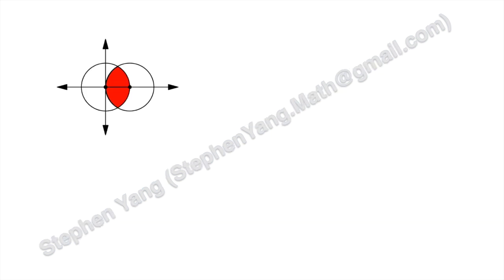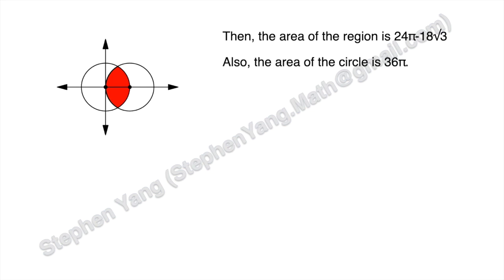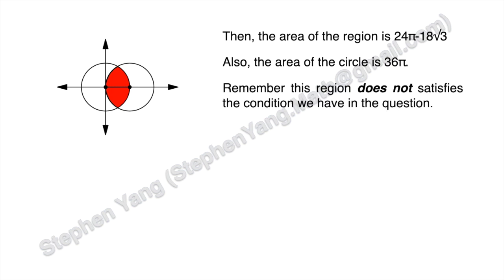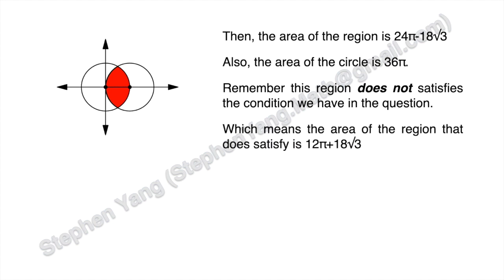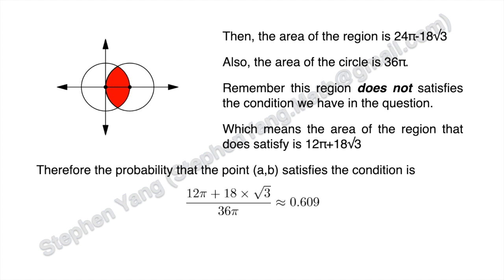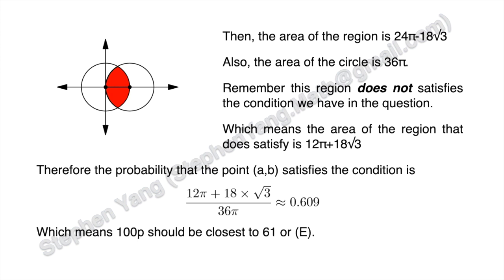Going back to the picture, the area of the red region is 24 pi minus 18 times square root of 3. The area of the full circle is 36 pi. Since this region does not satisfy our condition, we subtract it from the circle area. The region that does satisfy is 12 pi plus 18 times square root of 3. So the probability is (12 pi plus 18 root 3) divided by 36 pi, which is approximately 0.609, meaning 100p is closest to 61 — answer E.